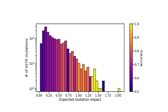This is also shown in this histogram, which contains data from all 1584 ESTR mutations found in our validation set. The mutations were binned based on expected mutation impact, and each bin is colored based on the prediction accuracy of the ESTR mutations for that bin. What we see is that for bins with a higher expected impact, the prediction accuracy also tends to be higher.